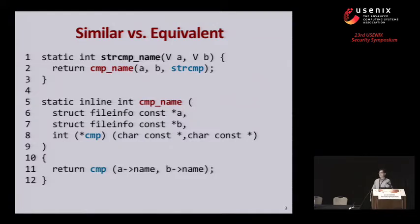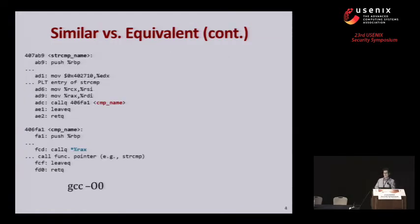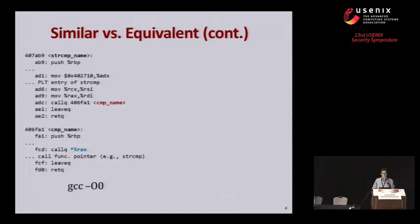Obviously, if we compare this source compiled twice with different optimization settings while looking for similar functionality, our system should output the two resulting binary snippets as similar, since they come from the same source code. However, when I say similar, I strictly do not mean equivalent. If you look at what GCC generates with the -O optimization setting, we can clearly see that the two individual functions are preserved — strcmp_name and cmp_name — and the call to the function pointer in RAX still happens, so most features observed in the source code are retained.